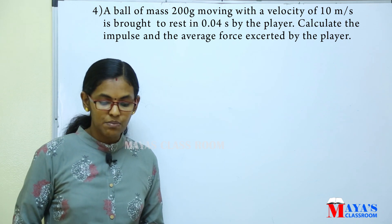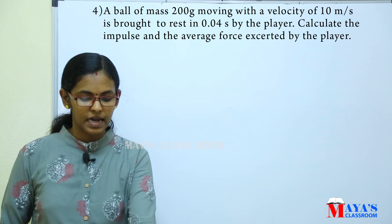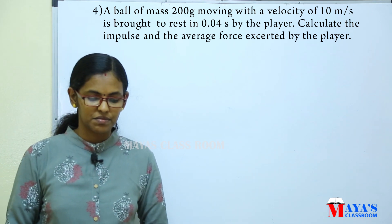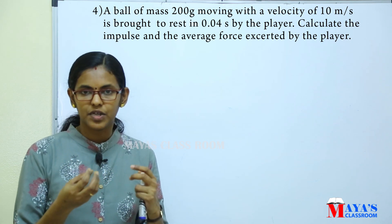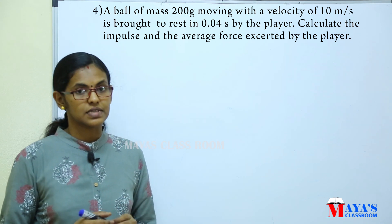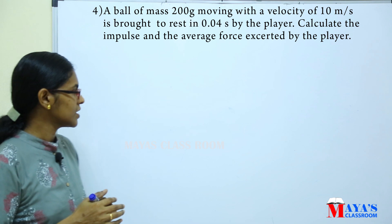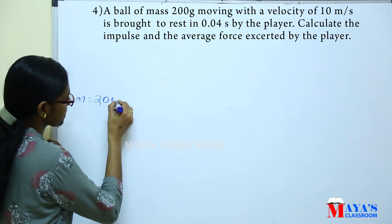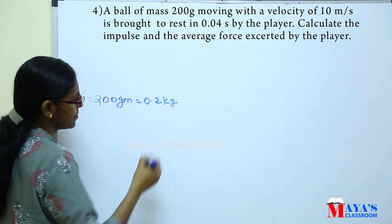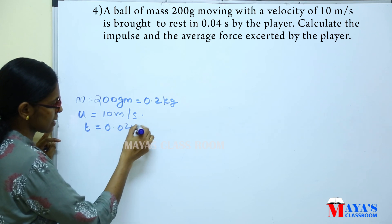A ball of mass 200 grams moving with a velocity of 10 m/s is brought to rest in 0.04 seconds by a player. Calculate the impulse and the average force exerted by the player. The mass is 200 g = 0.2 kg, initial velocity = 10 m/s, time = 0.04 seconds.